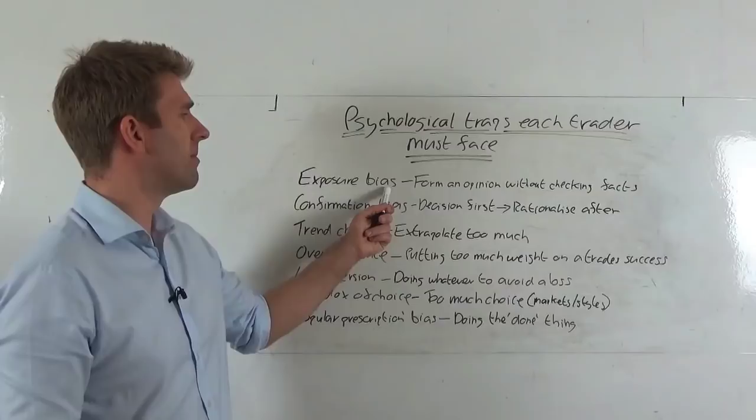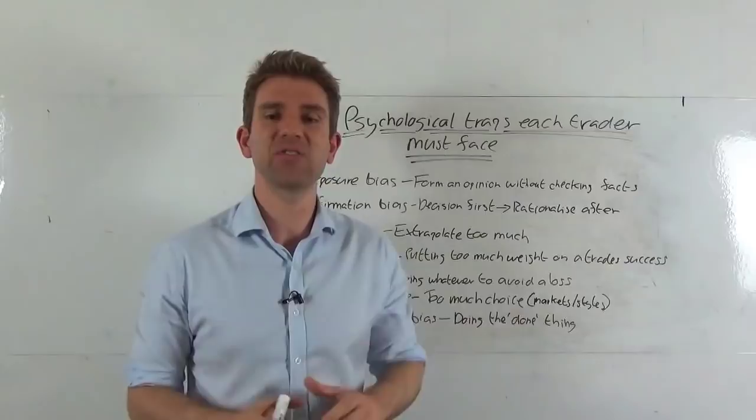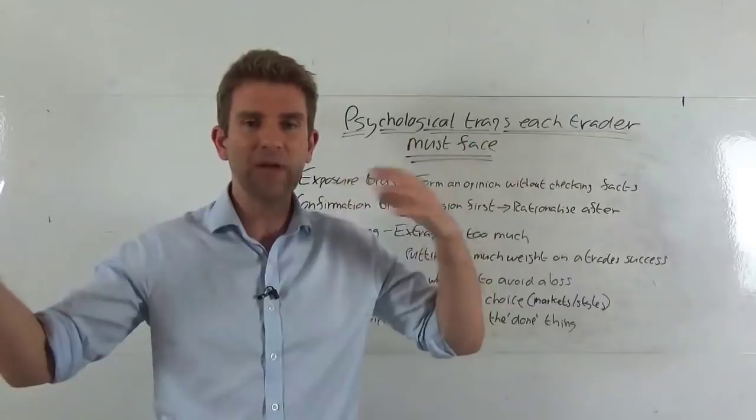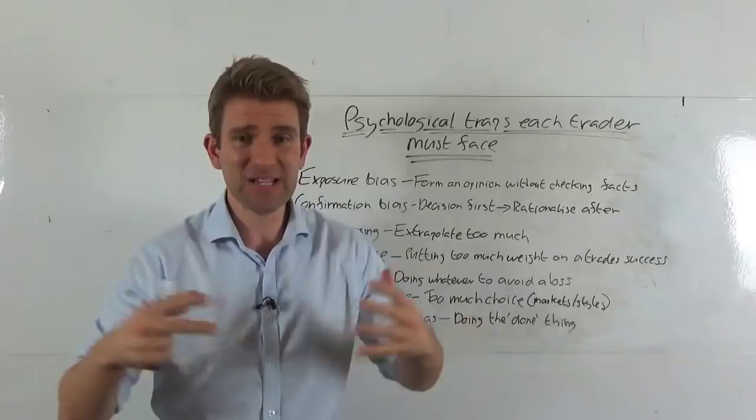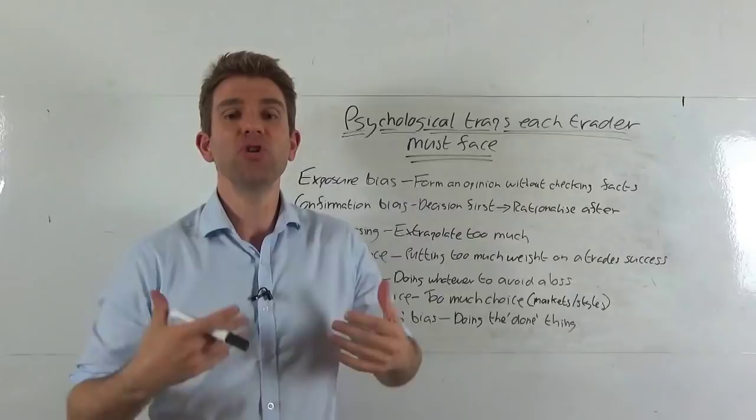The first one is exposure bias. What is exposure bias? Exposure bias is you form an opinion without checking the facts. So you're bombarded with all this information about a specific market, specific stock, whatever it is. So you're forming an opinion without checking things for yourself. You might have a massive amount of bullish exposure to a specific market. When in reality, you need to check the facts for yourself. You're exposed too much to one side of the coin.